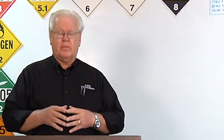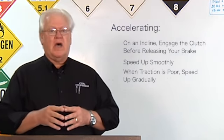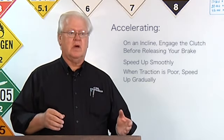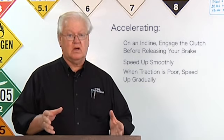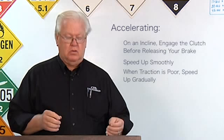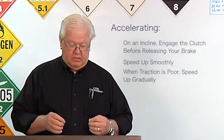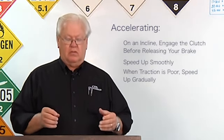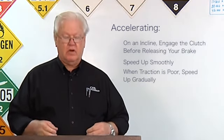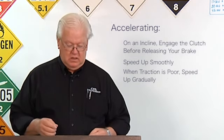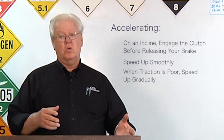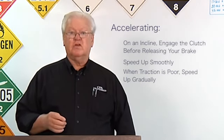When you're at a stop sign on a slight grade, don't let the truck roll backwards because you might hit somebody behind you and cause damage or hurt somebody. Engage the clutch before you let off the brake, then release it slowly without rolling back, give it a little gas and go forward. Speed up smoothly — a rough acceleration can be hard on the drive chain. Speed up gradually when traction is poor, like in rain or snow, and take your foot off the accelerator if you lose traction.